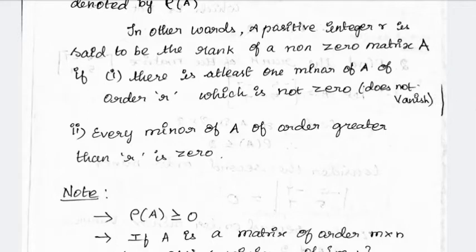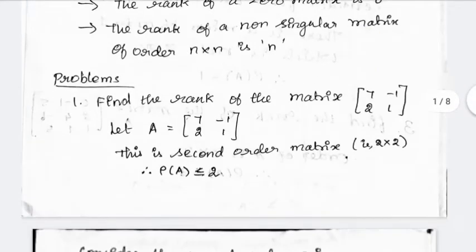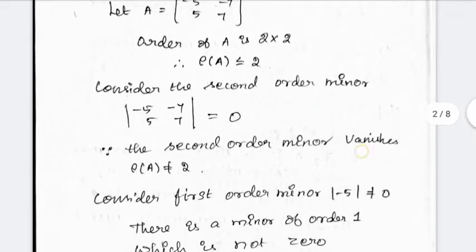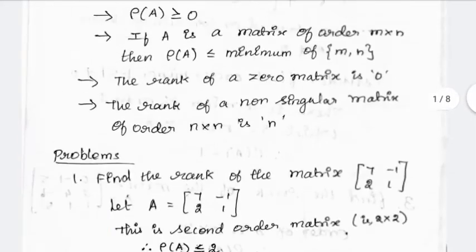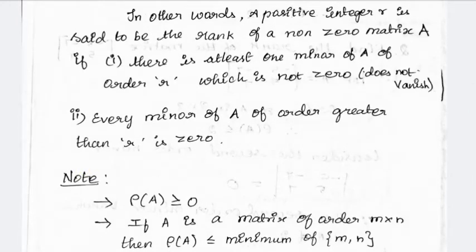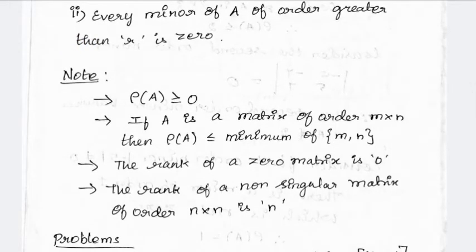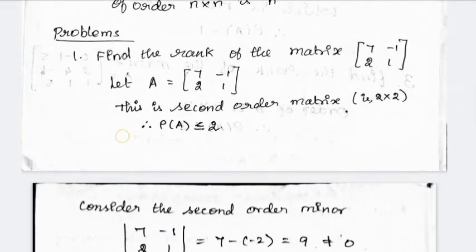Every minor of A of order r greater than ρ is 0. That's why if r is greater than ρ, we have rank 1 with value 0. If A is a matrix of order m×n, then rank of A is less than or equal to minimum of m and n. For a 2×2 matrix, rank is less than or equal to 2.